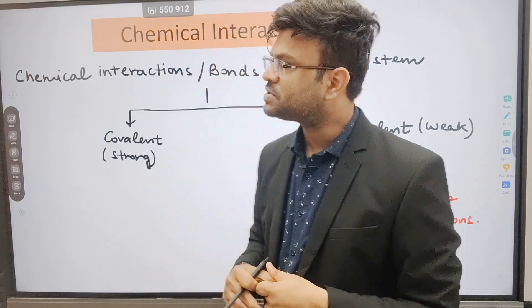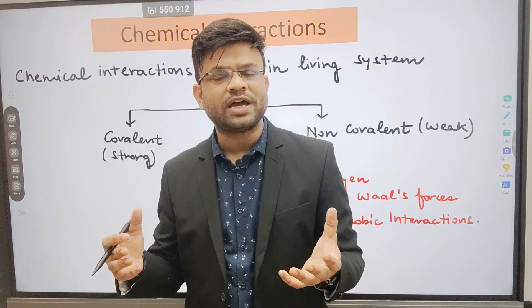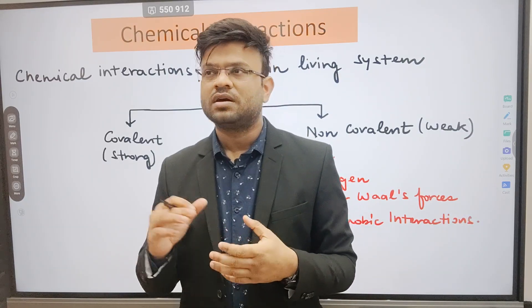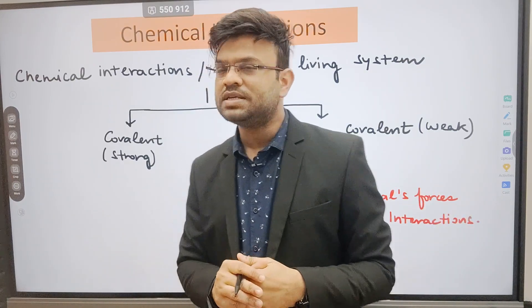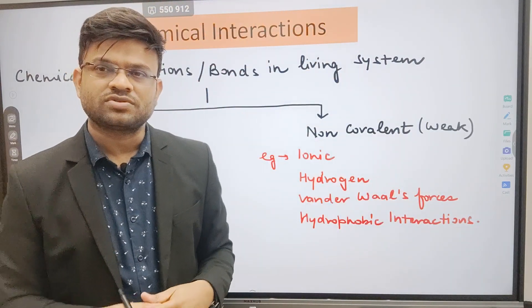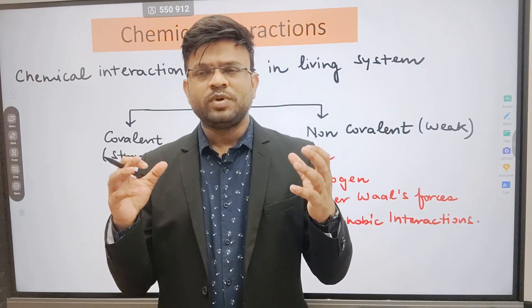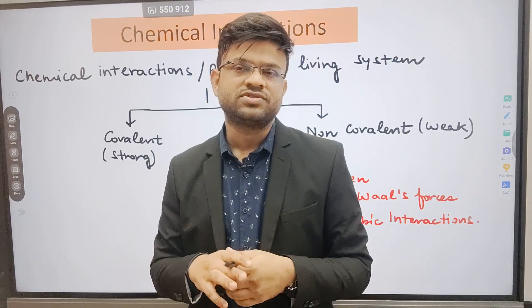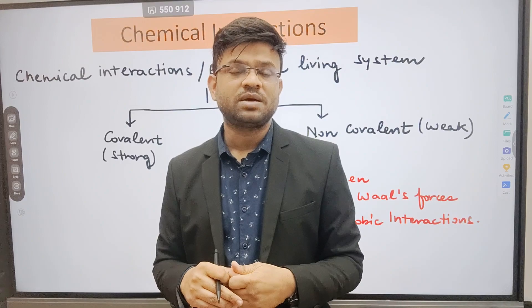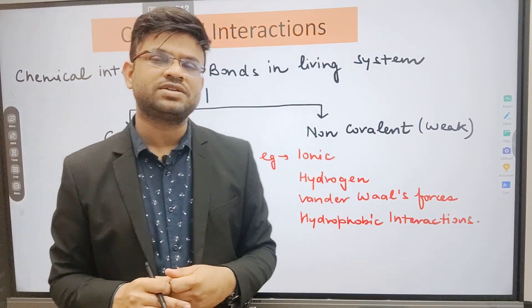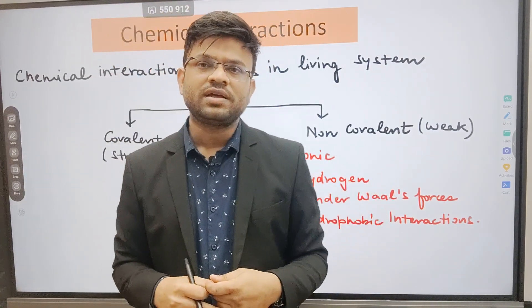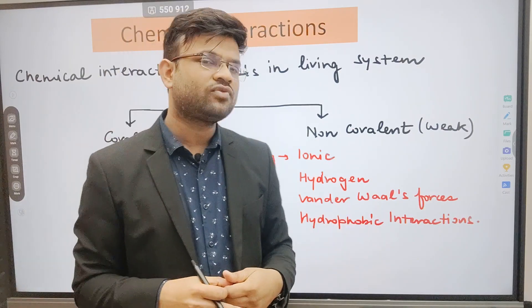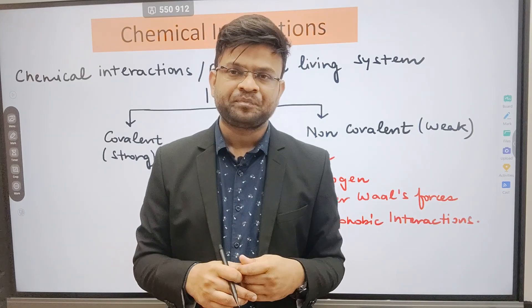There are different types of chemical interactions taking place inside a living system, and these can be majorly classified into two types. Since we are talking about biochemistry, the bondings forming between different biomolecules can be classified as covalent bonds and non-covalent interactions. Covalent bonds are very high in strength — the bonding is very strong. Non-covalent interactions are majorly weak in nature. The different types of non-covalent interactions can be ionic, hydrogen bonding, van der Waals forces, and hydrophobic interactions.